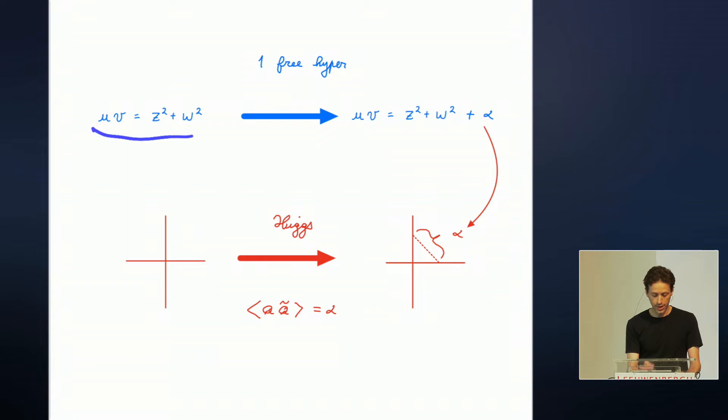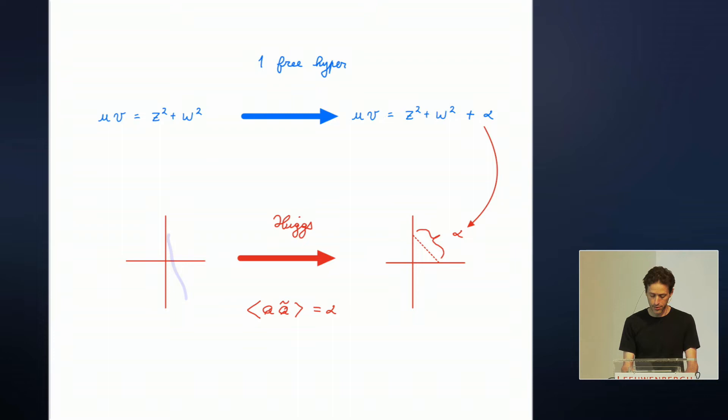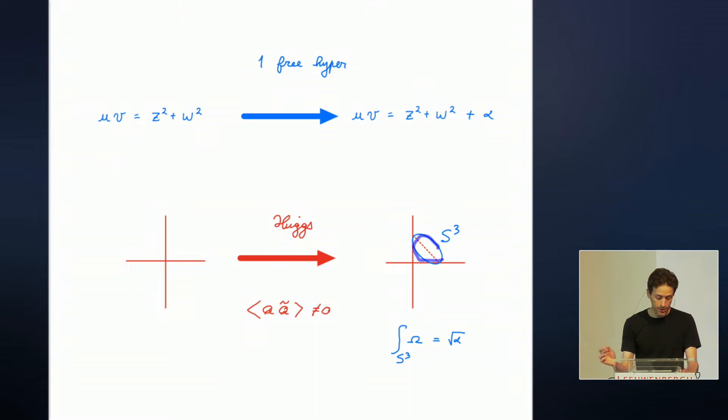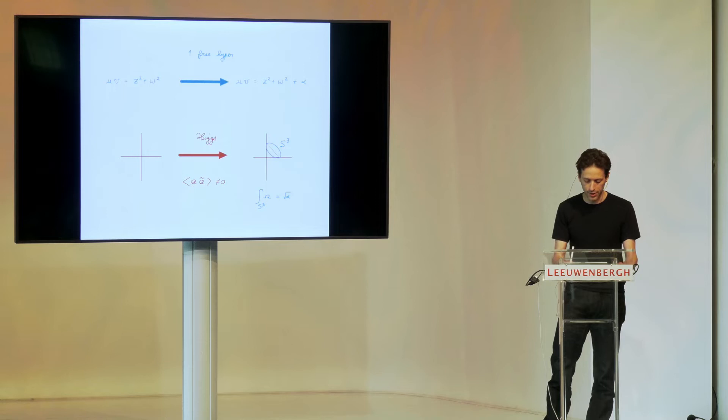We could also take the conifold in algebraic form and deform it by a constant, making it into a smooth variety. In terms of the toric diagram, Vafa and others understood that this means lifting a line off the page, giving a fibration over an interval, which gives rise to a three-sphere. The three-sphere can be interpreted as a vev for the hyper — specifically for the bilinear made from the two halves of the hyper.